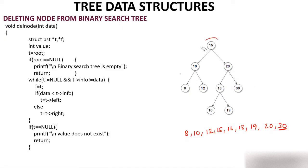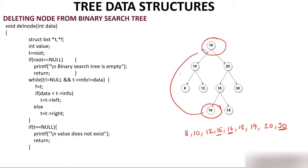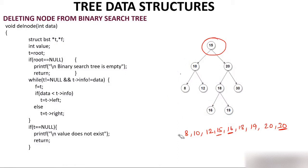Suppose I want to delete 15 — what will come in place of 15? The in-order successor of 15 is 16. So 16 will take the place of 15, and 16 will be the new parent of 10 and 20. This is the formula: the in-order successor takes the place of the deleted node. Now let's look at the coding part.